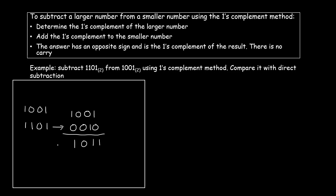Once you add these, you will not find any carry. If you've seen my previous video on subtracting a smaller number from a larger number, you would have noticed that you do get a carry. But in this case you won't get a carry, which means this number is in its one's complement form and has the opposite sign. To get the actual result, we need to find the one's complement of this result.